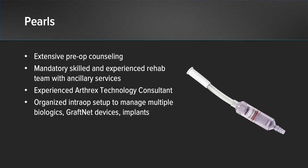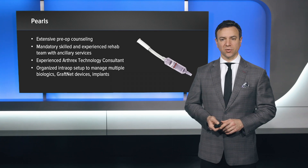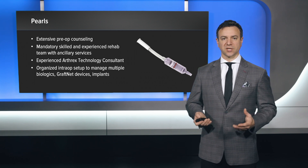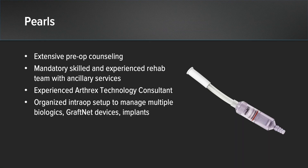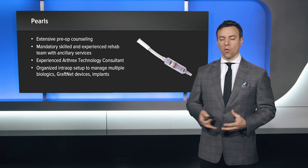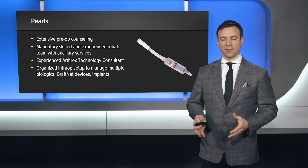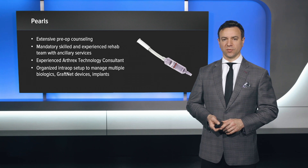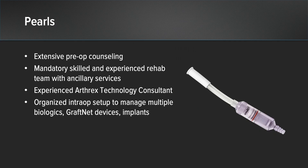Pearls of this case include extensive pre-operative counseling. These patients really need to understand what will be involved in their peri- and post-operative care. These can be painful procedures. Fortunately, our arthroscopic nature allows us to optimize effectiveness and accomplish this in a method that is relatively pain-free. It's mandatory that a skilled and experienced rehabilitation team with ancillary services are available to ensure that the patient does not become stiff post-operatively, develop abnormal gait patterns, or over-utilize muscles which may not be prepared to rehabilitate at certain time frames. A milestone-based approach is always used intraoperatively. It's extremely vital to have an experienced Arthrex biologics representative, both from the surgeon's perspective and the peri-operative surgical staff, to ensure that a smooth and efficient care flow is promoted. It's key, if you're using multiple biologics, to have a very organized intraoperative setup, both from the standpoint of biologics, graft nets, and implants.